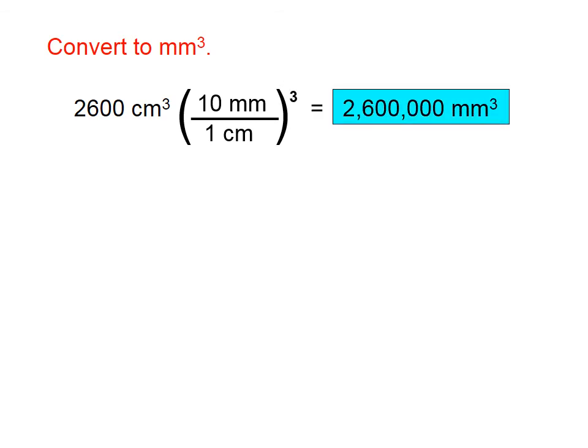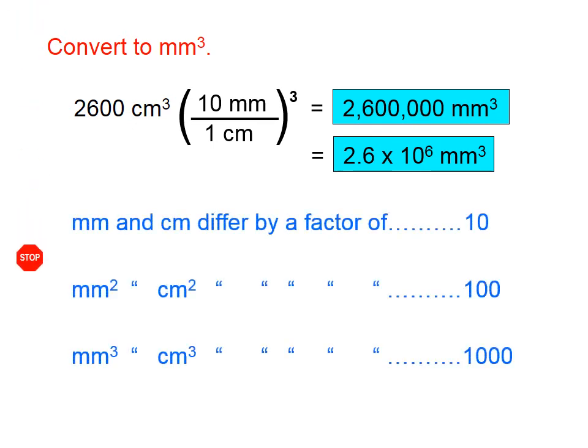When we convert 2600 cubic centimeters into cubic millimeters, it turns out to be 2,600,000 cubic millimeters, or 2.6 times 10 to the 6 cubic millimeters.